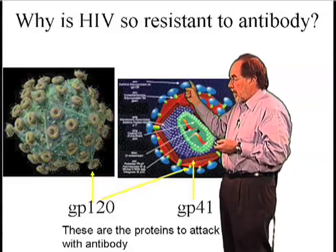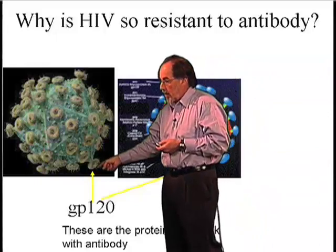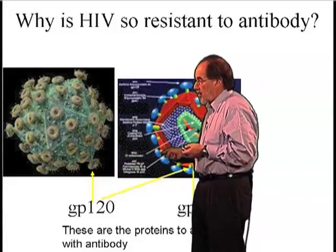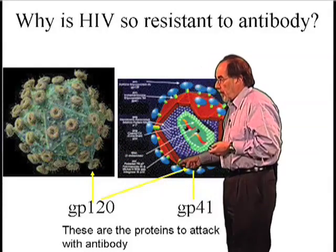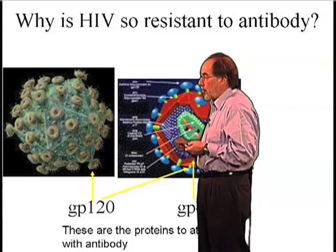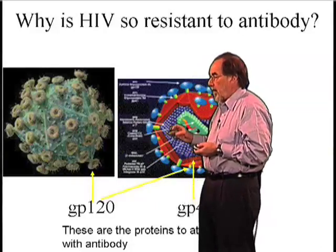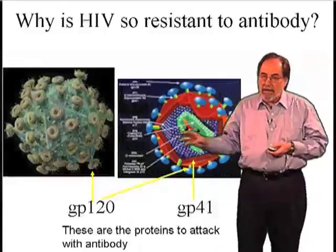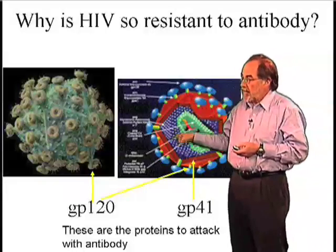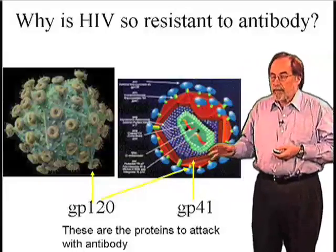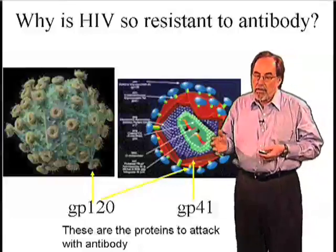The spike is made of two components: a head, which is called GP120 — you can see that down here very well — and a spike that goes into the membrane, which you can see over here very well, known as GP41. So we have GP120 on the surface and GP41 on the spike. There are human monoclonal antibodies known that will bind both to the head and to the spike and prevent an infection. The problem is that those antibodies do not have a high enough affinity to provide protection to people.